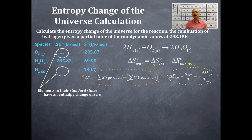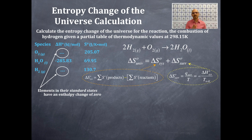The delta S-naught for the surroundings uses a different equation: it equals Q for the surroundings divided by temperature, which equals negative delta H-naught for the system over the temperature in Kelvin. This is why we have the enthalpy change values in our data table — we'll do products minus reactants, then divide by temperature.